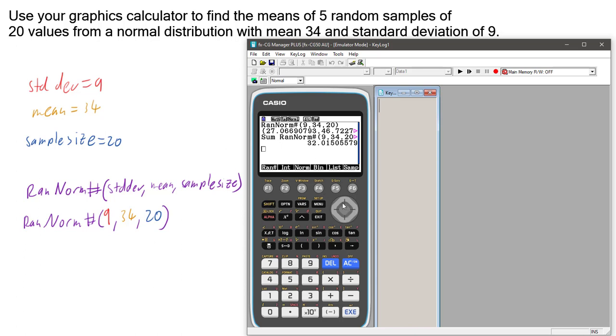So now if I want to do this again and again, I can press EXECUTE again and it duplicates and I get a different mean. So now I've got two out of my five: 32.02 and 34.32.